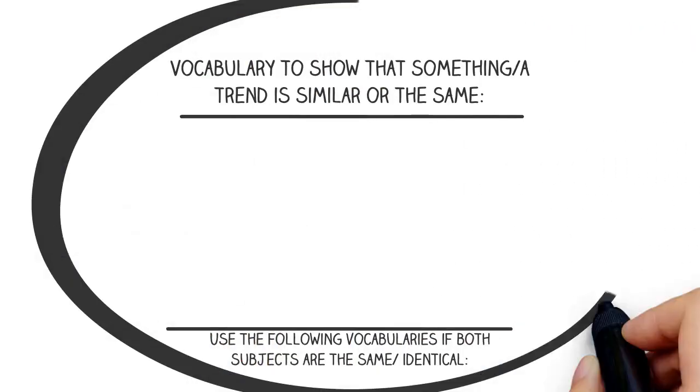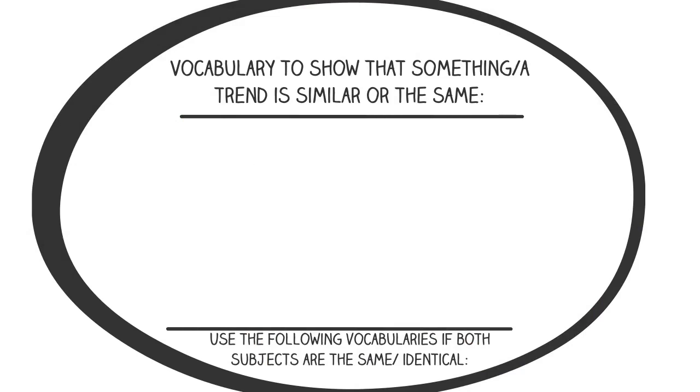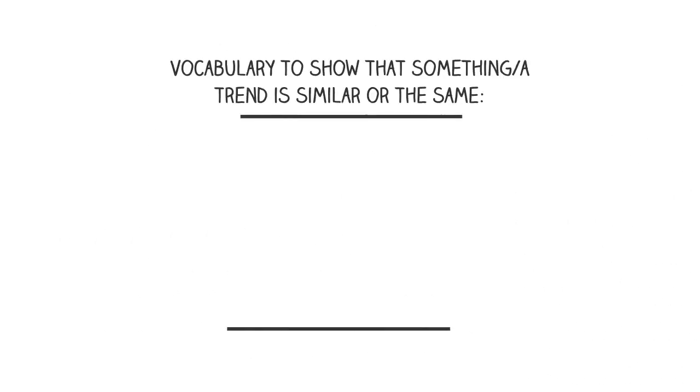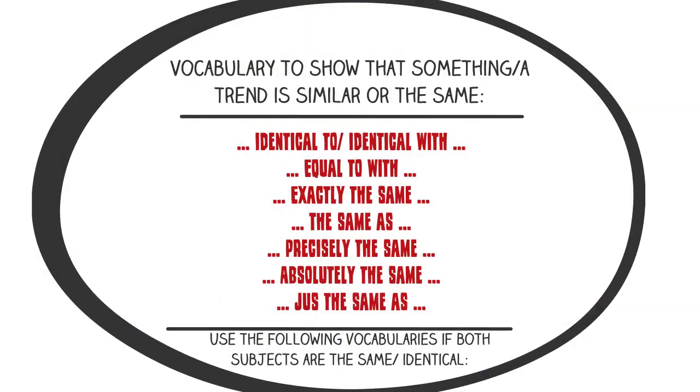Vocabulary to show that something or a trend is similar or the same. Use the following vocabularies if both subjects are the same/identical: identical to/with, equal to/with, exactly the same, the same as, precisely the same, absolutely the same, just the same as.